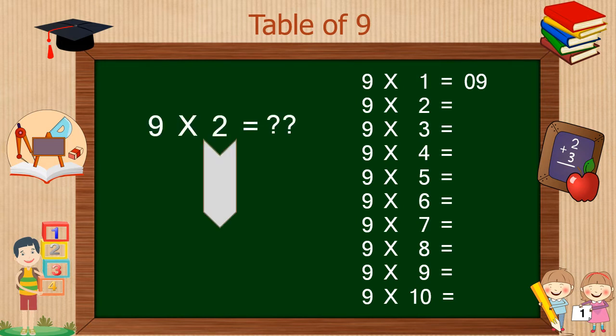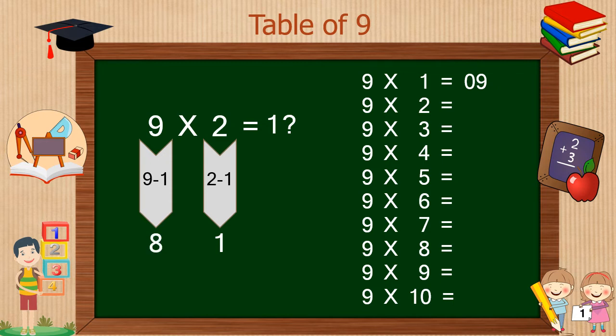Similarly, to find 9 times 2, we have to take one digit before 2, that is 2 minus 1 is 1, so 1 is our first digit. And to find the second digit, we have to subtract 1 from 9, that is 9 minus 1 is 8. So 9 times 2 is 18.